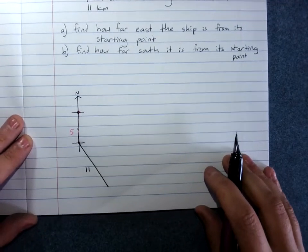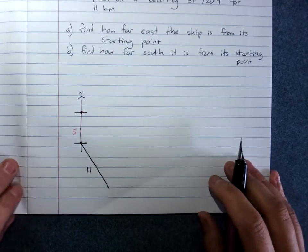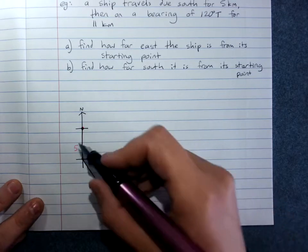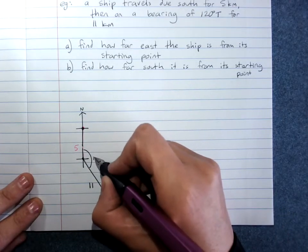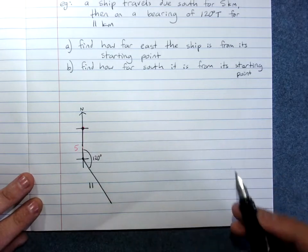This is the situation we've got. This is 120 degrees. Now, so far there's no right-angled triangle in this. You have to make one.